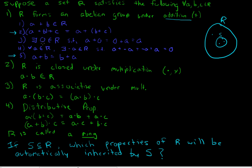Property three: the zero element. If the elements of S are chosen at random, there's no guarantee that zero is going to be one of those elements chosen. Zero could be in S or it could be outside of S. So the zero element is not a property that will be inherited by an arbitrary S.